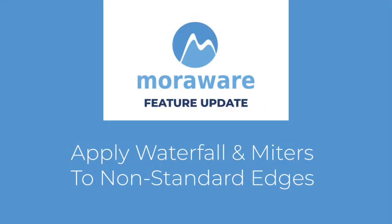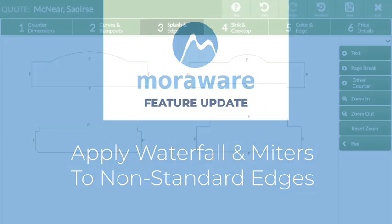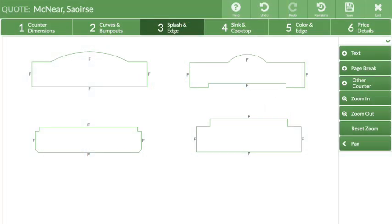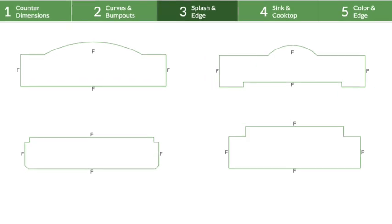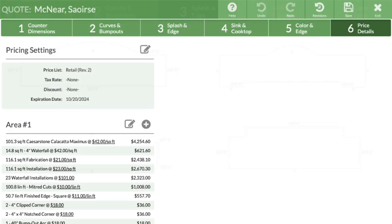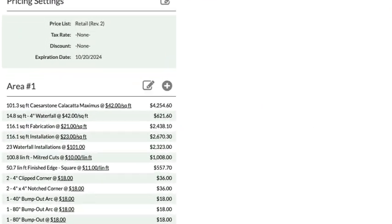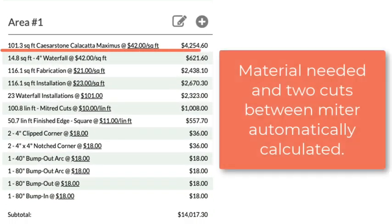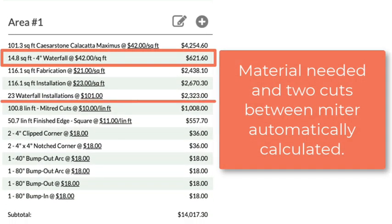Waterfall and miters can now be applied to non-standard edges — those that are segmented, have bump outs or bump ins, notched or clipped corners. As with standard waterfalls and miters, the amount of material required, as well as a charge for the two cuts between the pieces, is automatically calculated.